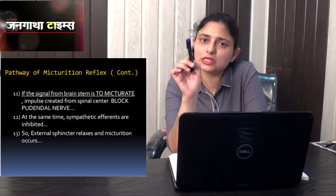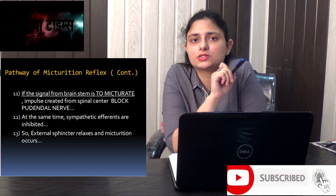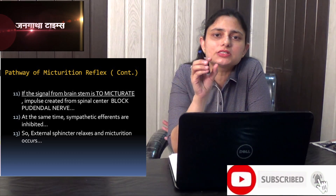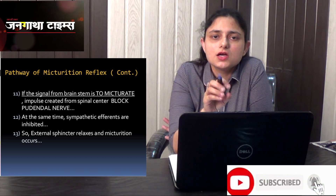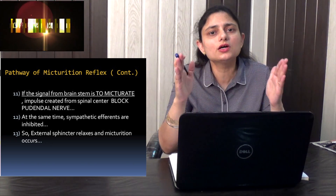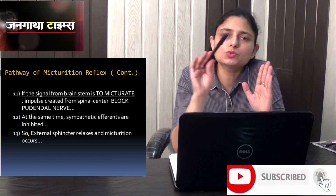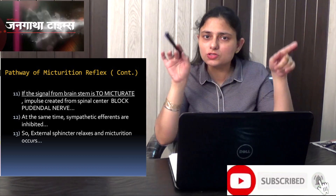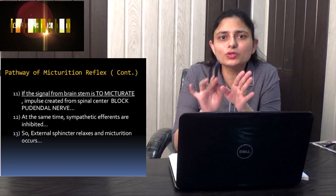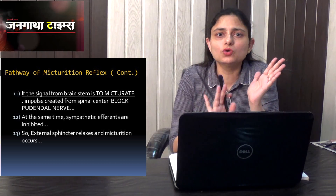When the signal from the brainstem is to micturate, the pudendal nerve is blocked. Since the pudendal nerve was constricting the external urethral sphincter, once it is blocked the external urethral sphincter will relax and open, and the urine will flow out. At this point, the bladder has already contracted and the internal urethral sphincter is open, so urine has reached that point where it can exit once the external sphincter opens.